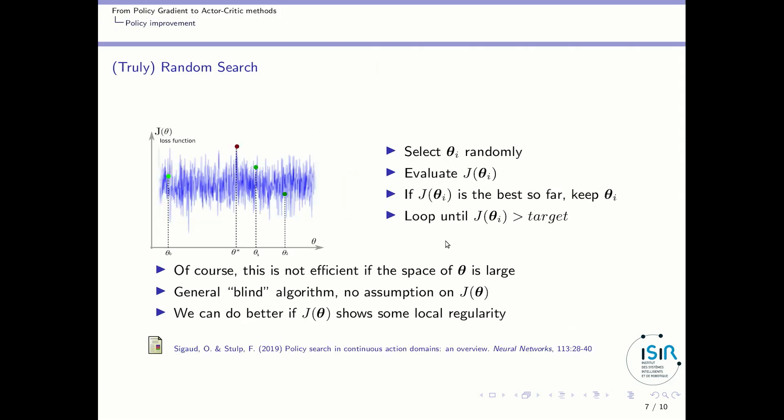The most basic direct policy search approach would be called truly random search. I say truly because there are some algorithms that are called random search which are not completely random. So what's truly random search? The idea is that you take a set of parameters θ randomly, you evaluate their performance. If the performance is the best so far you keep these parameters and you loop until some termination criterion, and for instance your termination criterion could be that you have a target performance and as soon as you get parameters that give you a performance that is higher than your target you can stop.